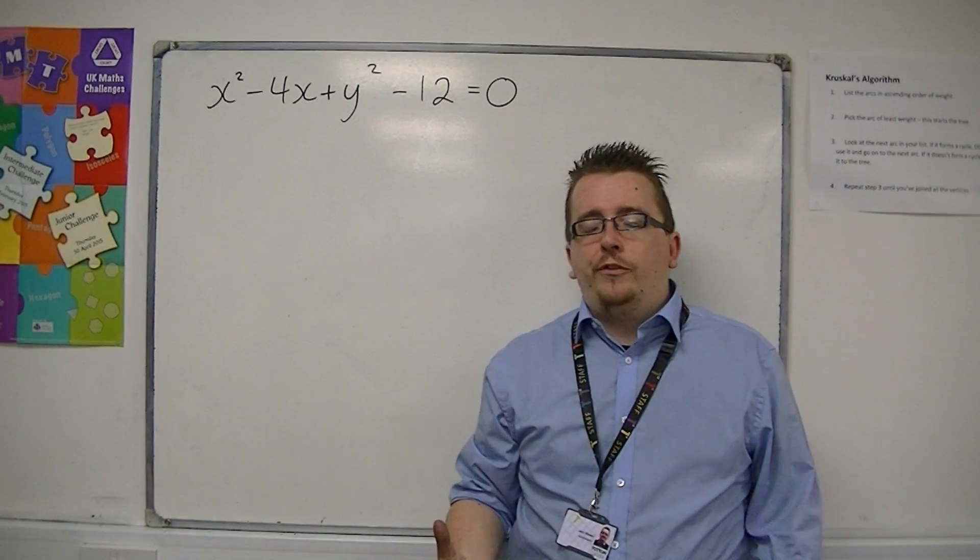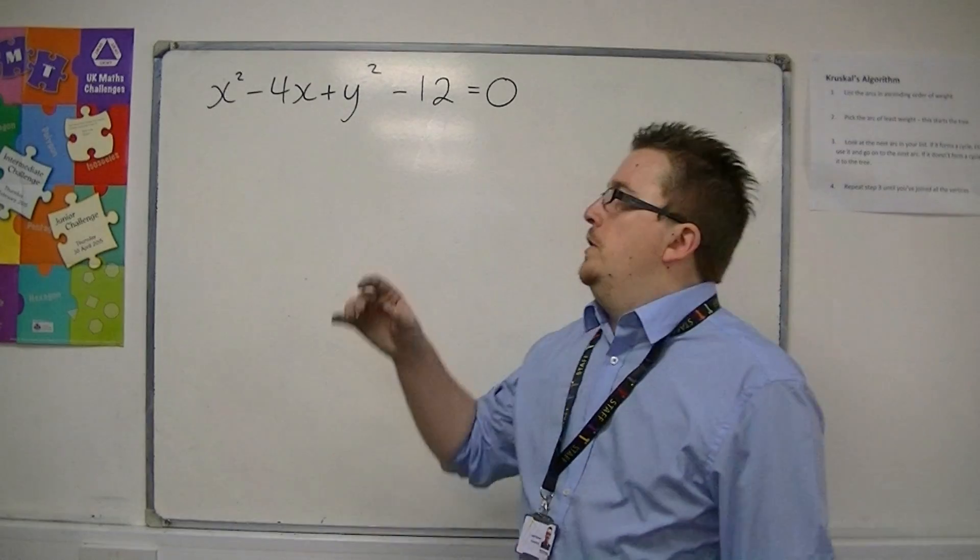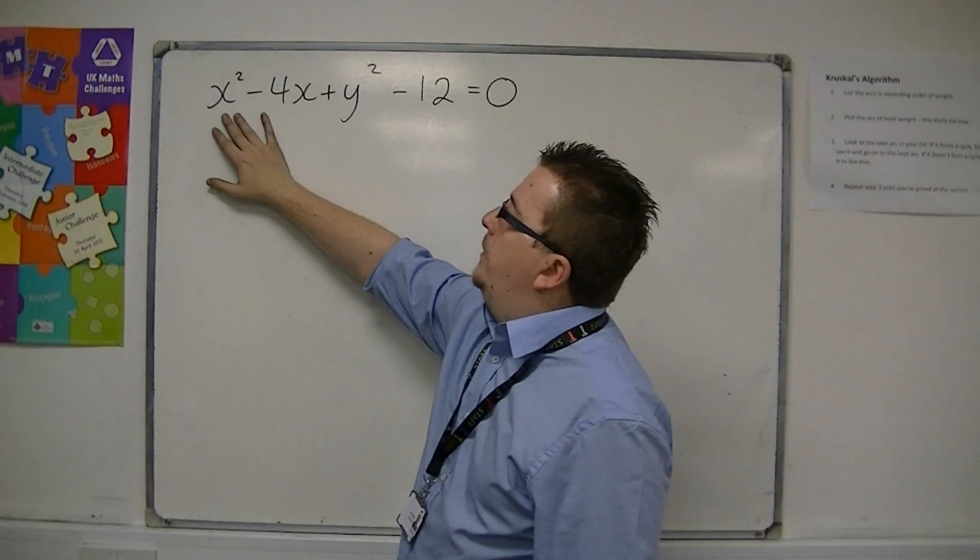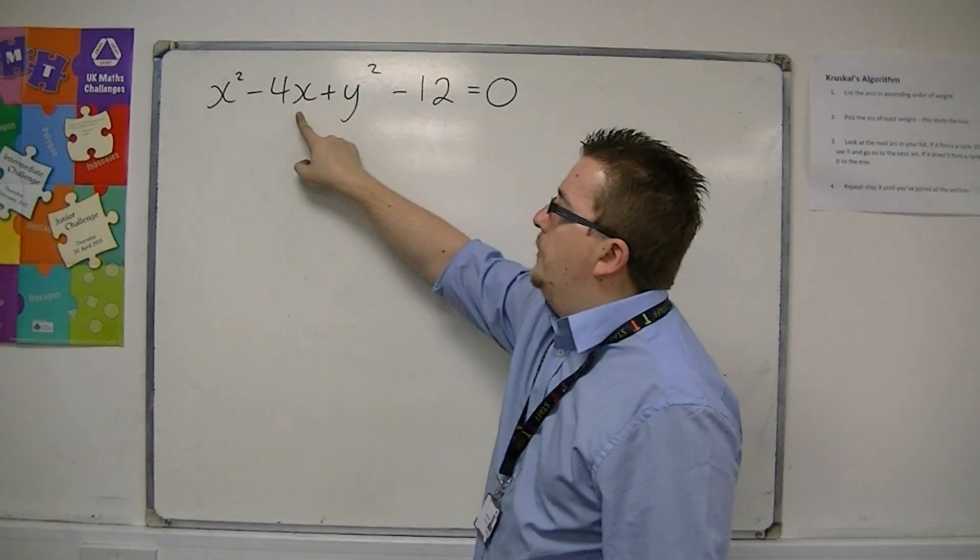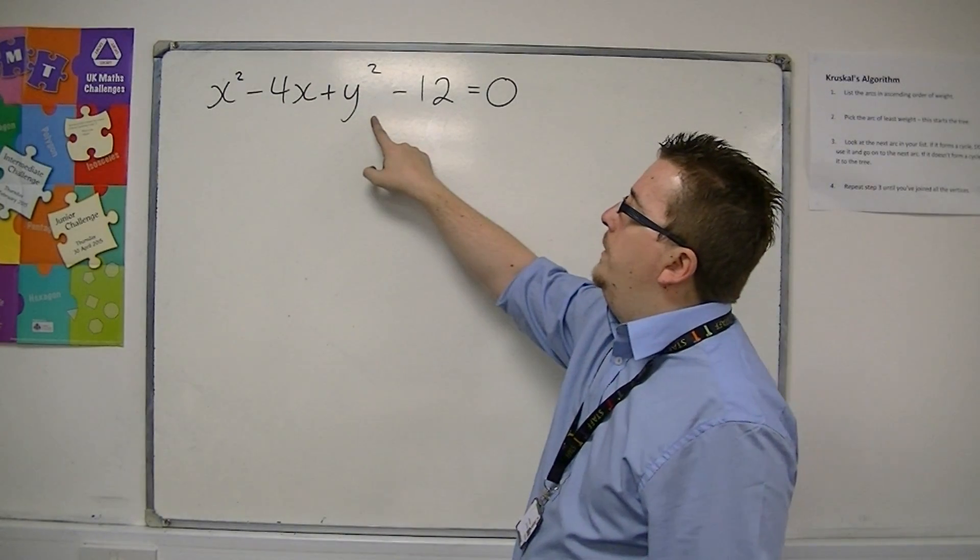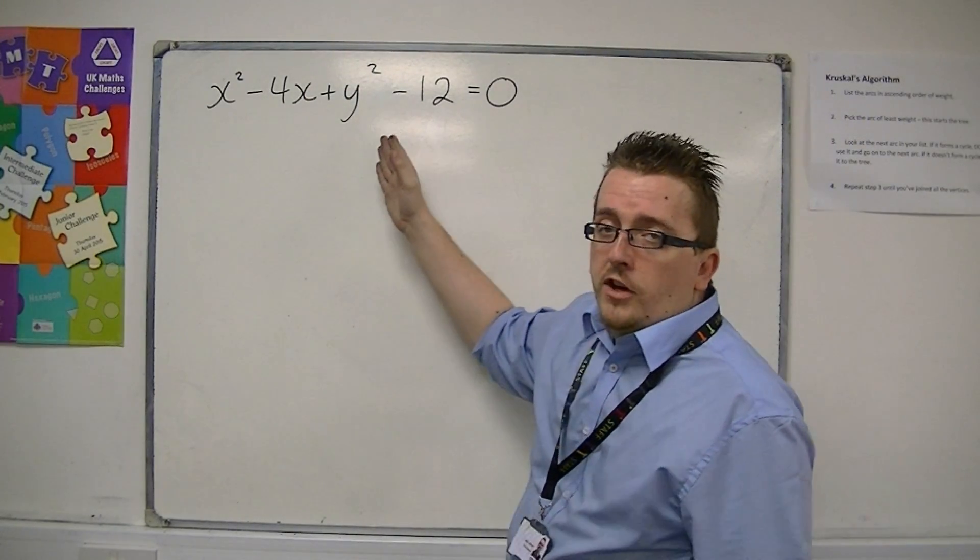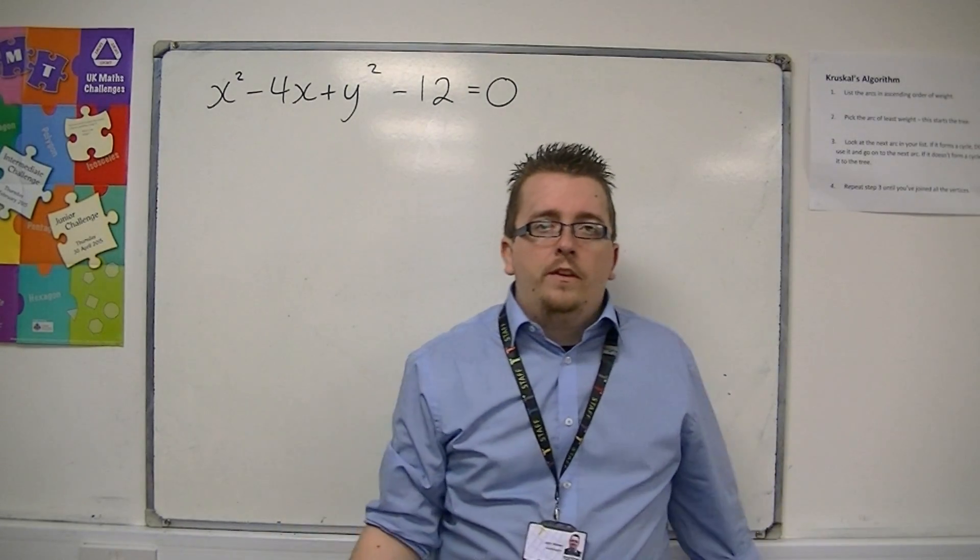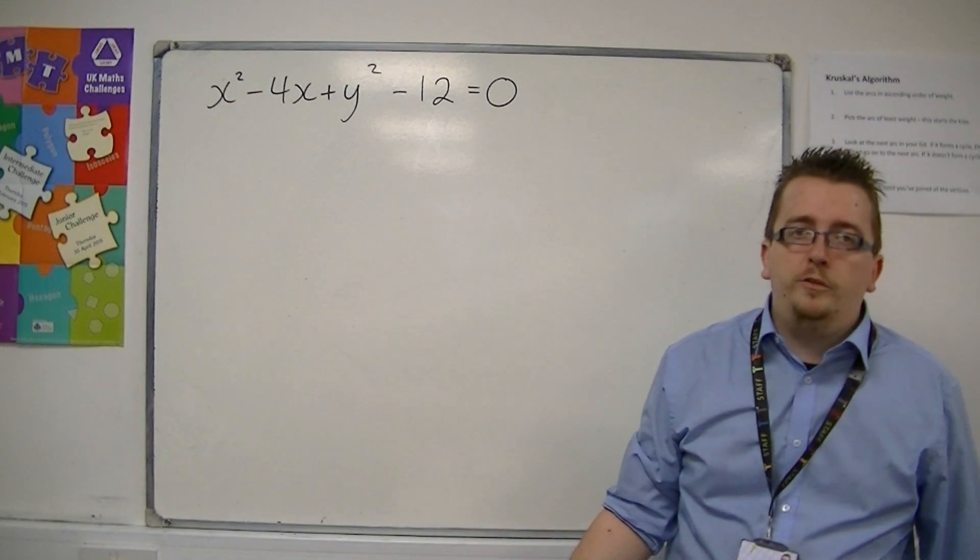Sometimes you can come across the equation of the circle written in this format, where you've got an x squared, a linear term in x, a y squared, there may be a linear term in y, but this one doesn't, and you have a constant term. And it looks slightly different to how we've had the equation of the circle before.